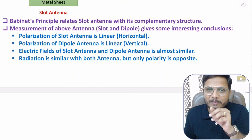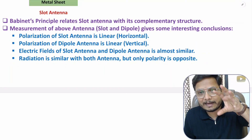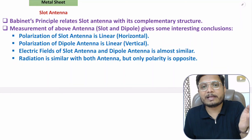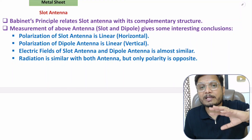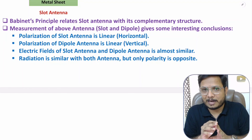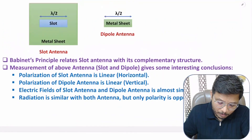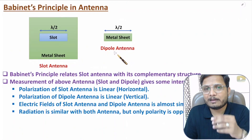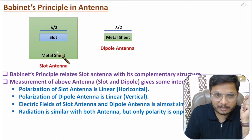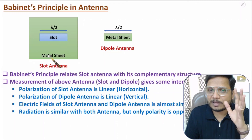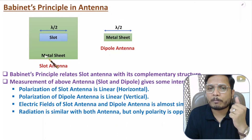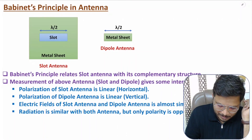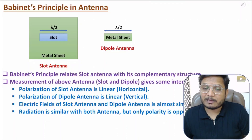Radiation is similar with both antennas but polarity is opposite. The complement of radiation means that instead of variation of electric field it is replaced by magnetic field, and magnetic field is replaced by electric field — with respect to pattern. So when you want to design a slot antenna, you can use a dipole antenna as reference. For multiple slots, consider an array of dipoles, calculate the field, take its complement, and the resulting radiation characteristics will be those of the slot antenna.